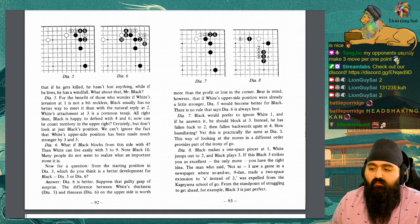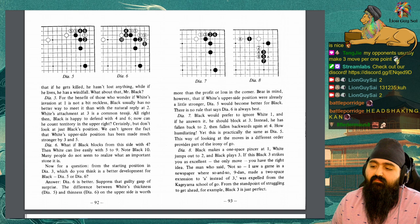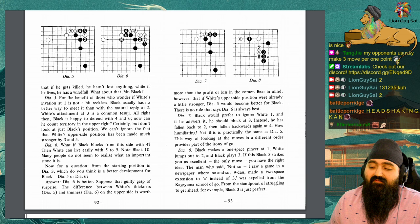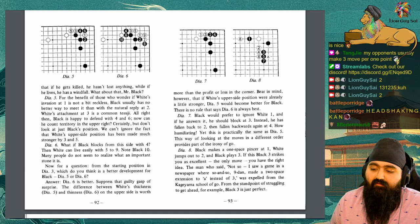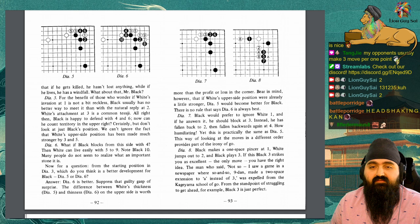Diagram 6. What if black blocks from this side with 4? Then white can live easily with 5 to 9. Note black 10. Most people do not seem to realize what an important stone it is. Now for a question. From the starting position in diagram 3, which do you think is the better development for black? Diagram 5 or diagram 6? The answer. Diagram 6 is better.